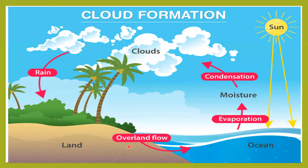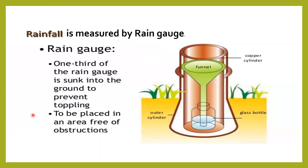This picture shows the formation of cloud. Rainfall is measured by a rain gauge. One third of the rain gauge is sunk into the ground to prevent toppling and make it stand erect properly. It should be placed in an area free from obstructions.